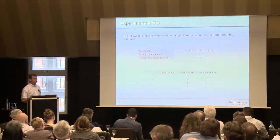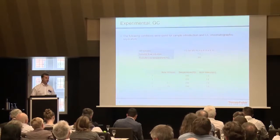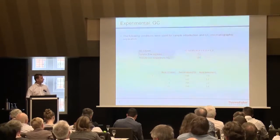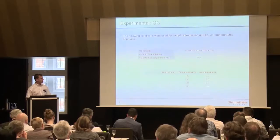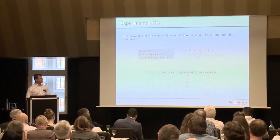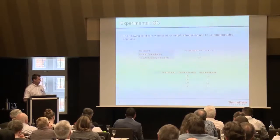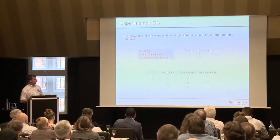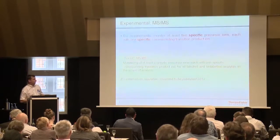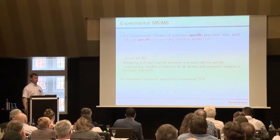The GC oven temperature program was slightly longer than 32 minutes — so pretty quick, but enough to achieve the chromatographic resolution we wanted.